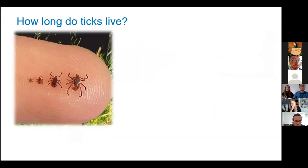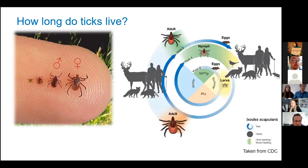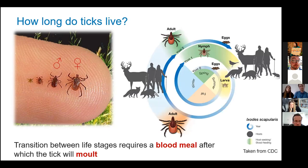So how long do ticks live? They've got three main life stages once they've hatched: larva, nymph, and adult. You can have adult males and adult females — females tend to be quite a bit larger and morphologically they look quite different. Ticks can actually take about two years to get to the adult stage of life, but if they continue to find blood meals, they can actually live for up to four years. To get to every next stage, they do need to take a blood meal in order to shed and move on — from larva to nymph, and then nymph to adult.